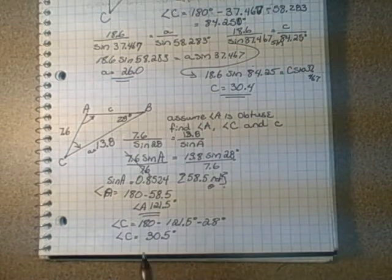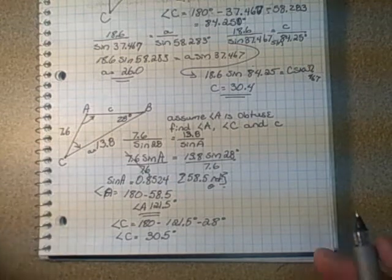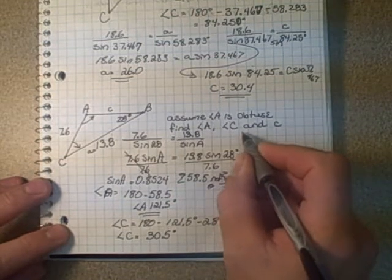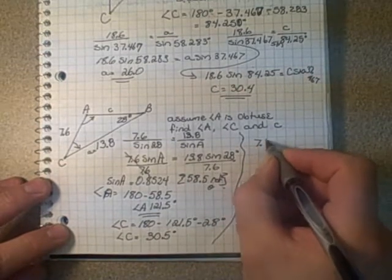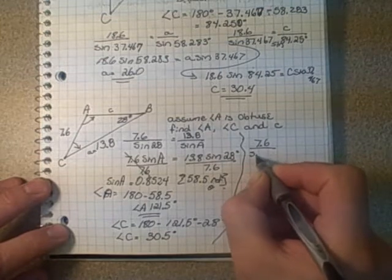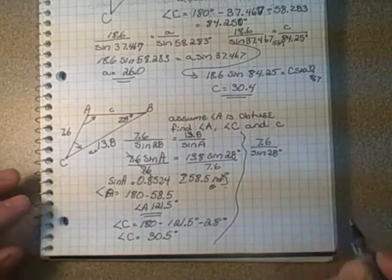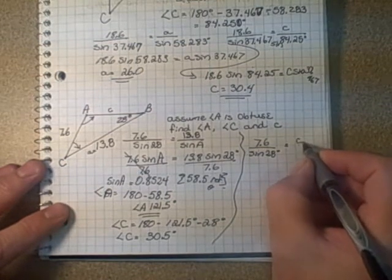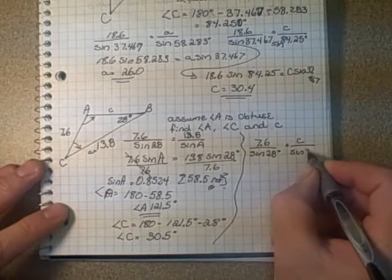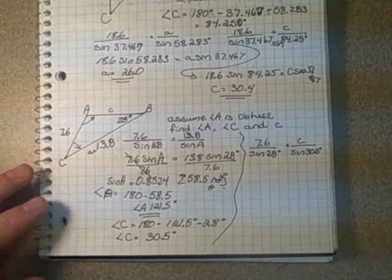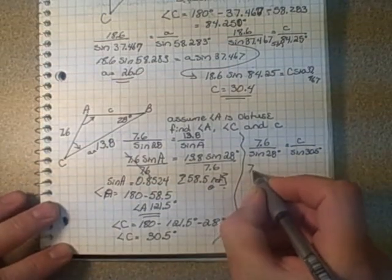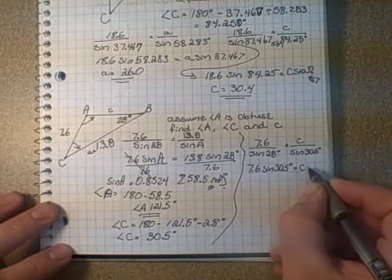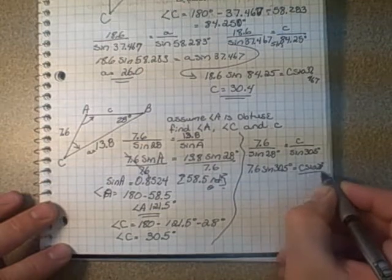Now we know that angle C is 30.5 degrees, so we can figure out side C by applying the law of sines one more time. We know 7.6 over the sine of angle B, sine 28 — that's side B over sine of angle B — equals side C, which is unknown, over sine of angle C, which is 30.5 degrees. We cross multiply: 7.6 sine 30.5 equals C sine 28. Then divide by sine 28 on both sides.